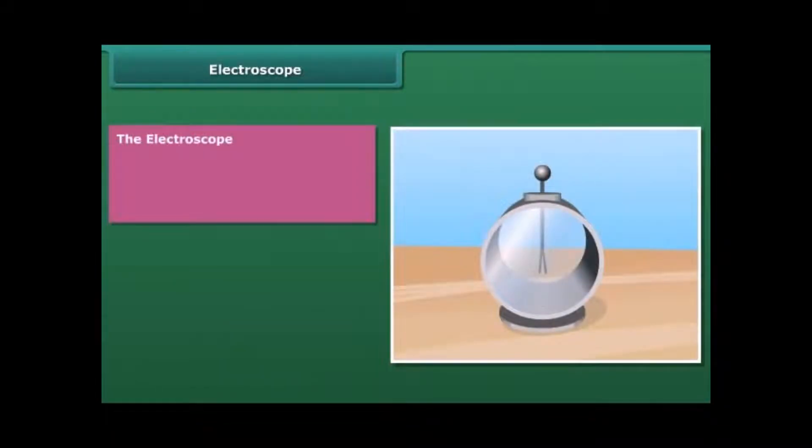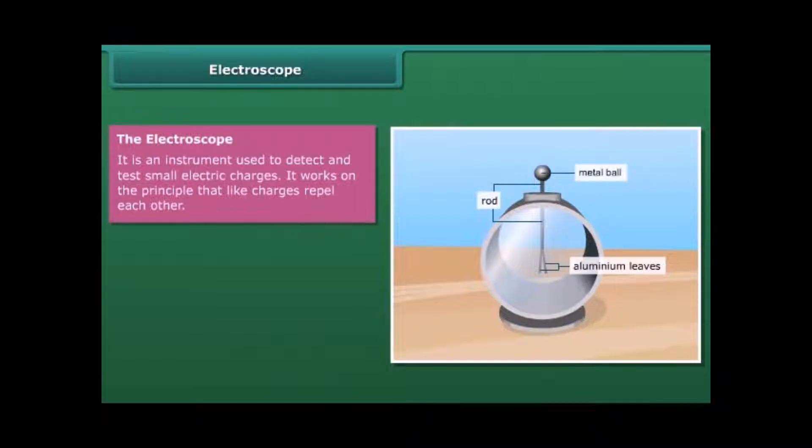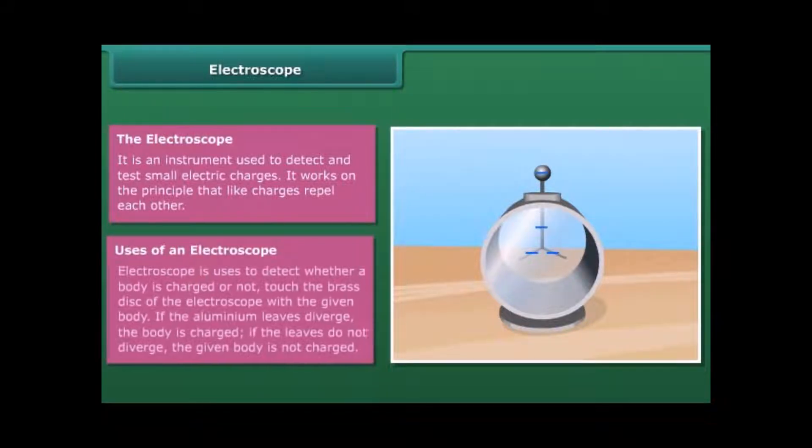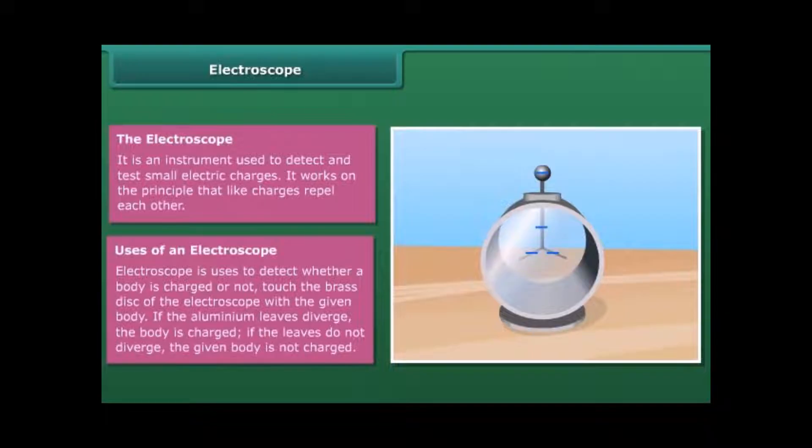The electroscope is an instrument used to detect and test small electric charges. It works on the principle that like charges repel each other. Electroscope is used to detect whether a body is charged or not. Touch the brass desk of the electroscope with the given body. If the aluminum leaves diverge, the body is charged. If the leaves do not diverge, the given body is not charged.